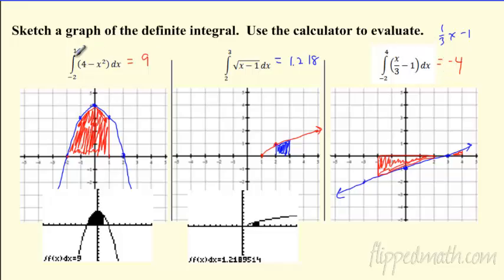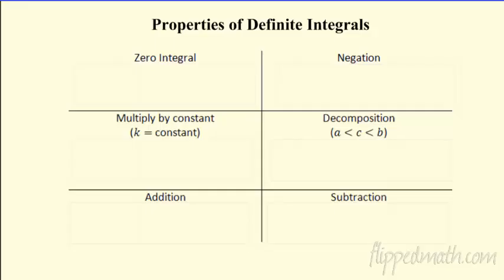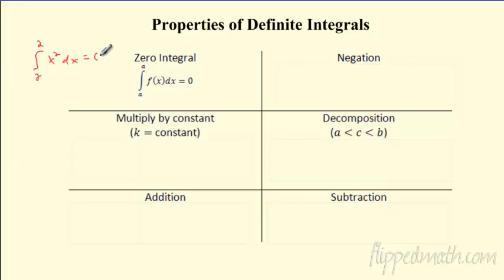We're using the graphing calculator feature to find integrals — same idea as with derivatives. Now let's wrap up with some properties to know. First, the zero integral property: if you integrate any function from A to A — for example, the integral from 2 to 2 of x² dx — you get 0, because you're integrating over no area.